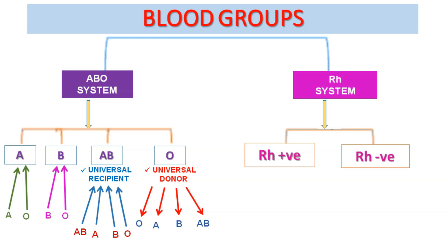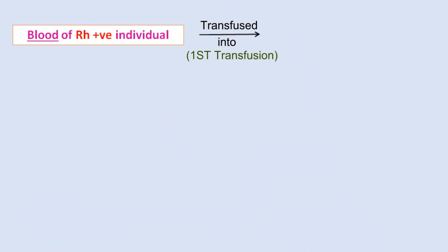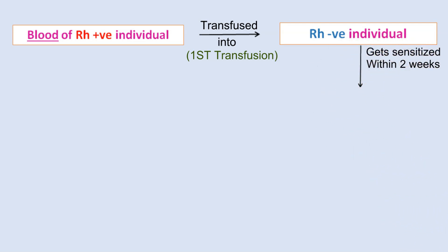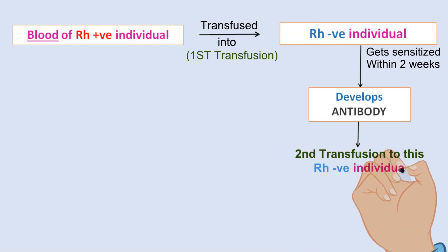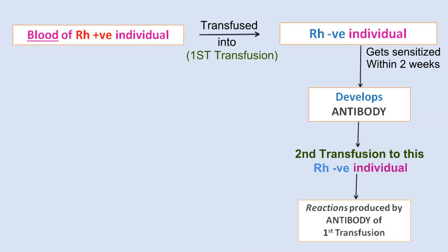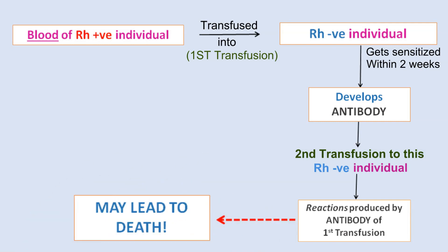The RH factor can be of two types: RH positive and RH negative. If the blood of an RH positive individual is transfused into an RH negative individual in a first transfusion, the RH negative individual becomes sensitized within two weeks and develops antibodies. If a second transfusion is then given to such an RH negative person, the antibody produced by the first transfusion causes a reaction with the transfused blood, which may even lead to death. The RH factor is also very important during pregnancy: an RH negative woman may become sensitized if she carries an RH positive child. The first RH positive child will be normal, but if she becomes sensitized, a second RH positive child conceived soon after may have blood trouble, sometimes leading to death of the fetus and abortion.